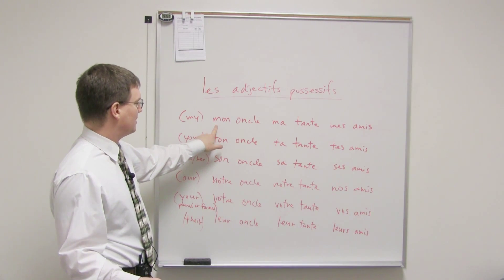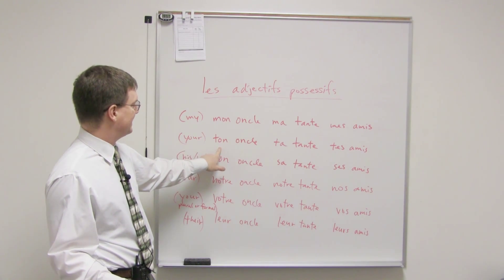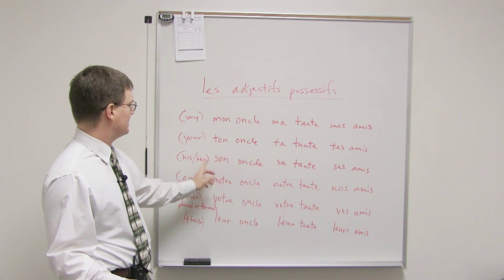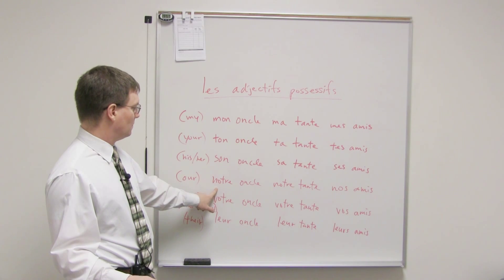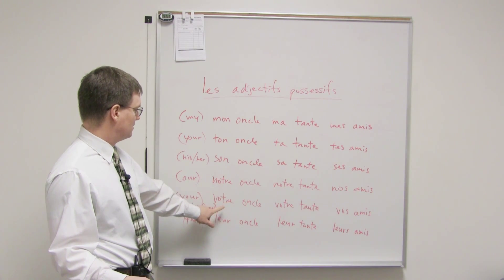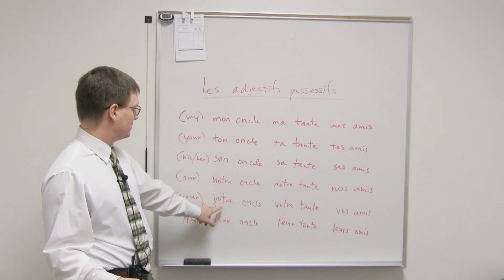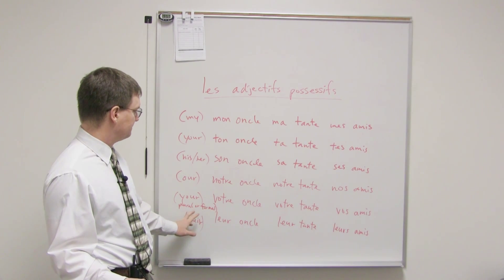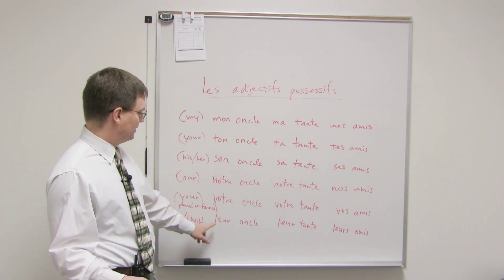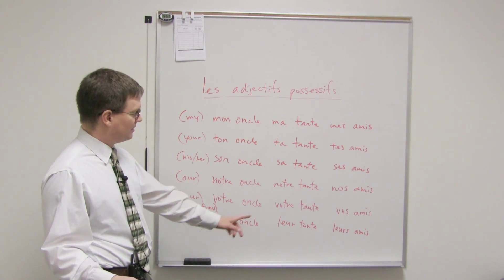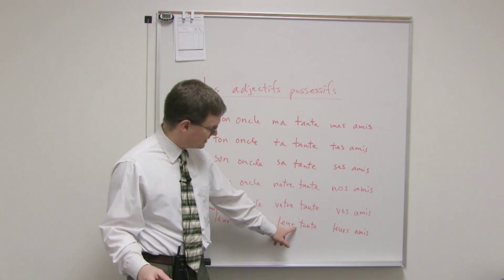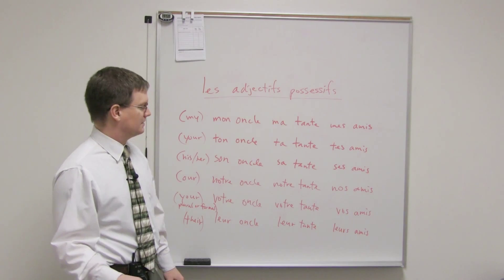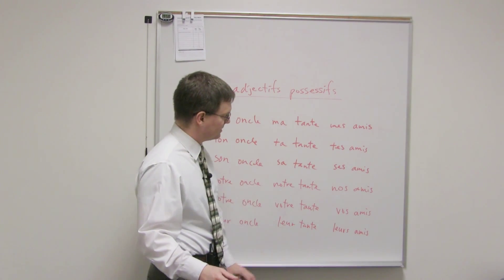So, mon, ma, mes is my. Ton, ta, tes is your. Son, sa, ses is his or her, depends on the context. Notre, notre, nos is our. Votre, votre, vos is your, which is usually formal or plural. And leur, leur, leurs with an S is their. Notice, leur never has an E after it. So, even if it's feminine here, it doesn't have an E.